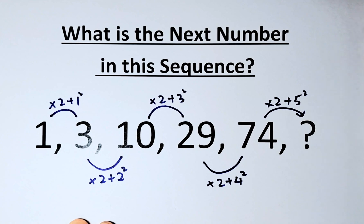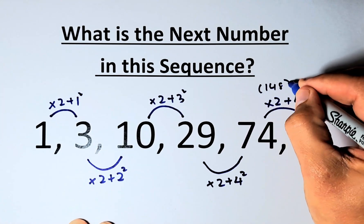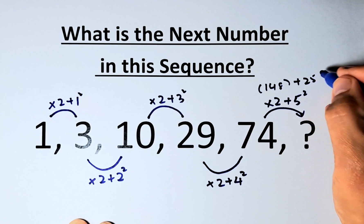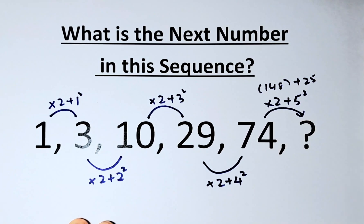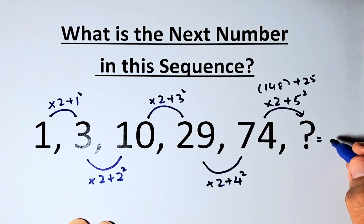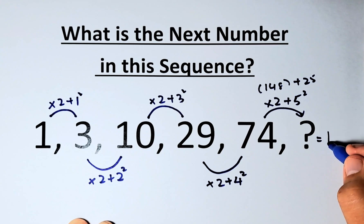So 74 multiplied by 2 is 148. I'm going to write it here. And 5 squared is 25. So 148 plus 25, the question mark is equal to 173.